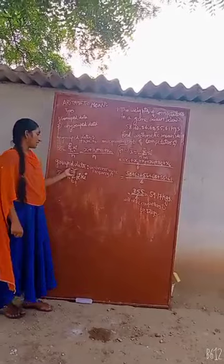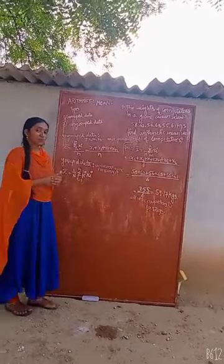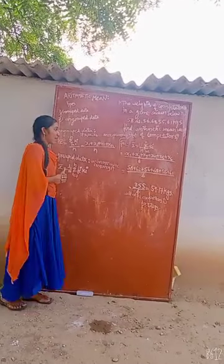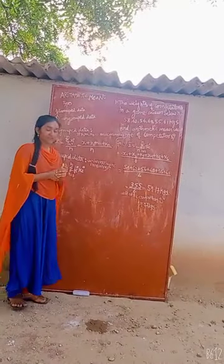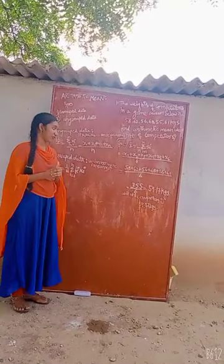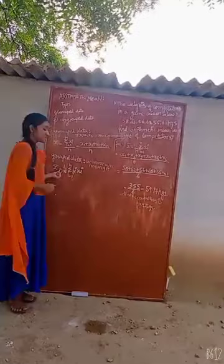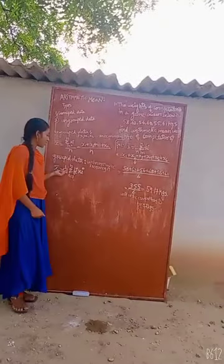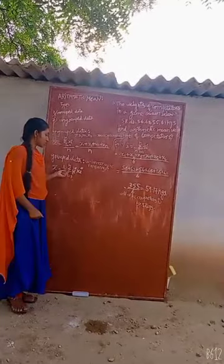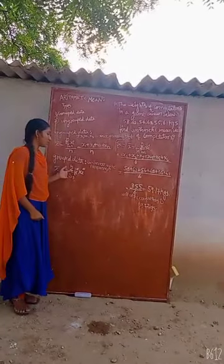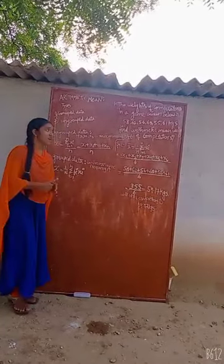Next, grouped data. If the variable xi has the frequency fi, the mean is defined as x-bar equals 1 by capital N, summation from i=1 to n of fi times xi.